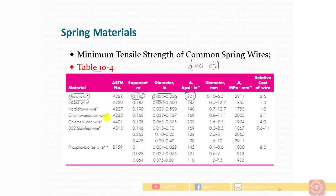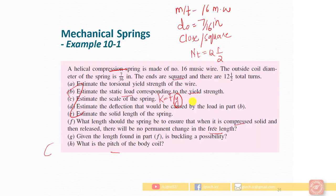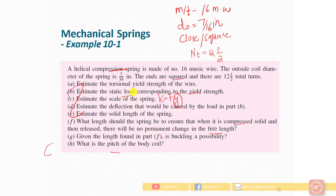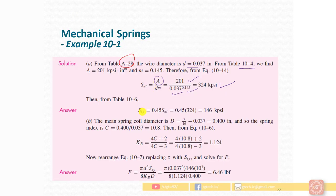With A = 201 and M = 0.145, and diameter D = 0.037, we calculate the ultimate tensile stress S_ut = 324 KPSI. The torsional yield strength for music wire steel is 45% of the ultimate tensile strength. Therefore, the torsional yield strength comes out to 146 KPSI.